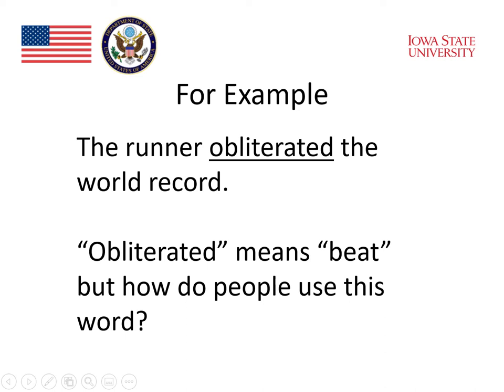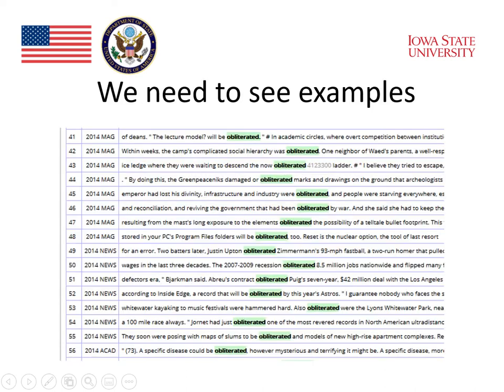Obliterated means 'beat.' But how do people use this word? We really need to see examples if we're going to understand how people use the word 'obliterated.' It's used in lots of different contexts besides obliterating the world record. In the illustration, we see a number of examples of sentences where the word 'obliterated' has been used.